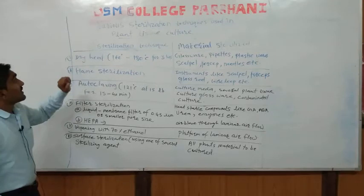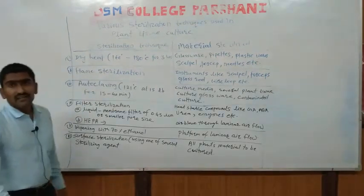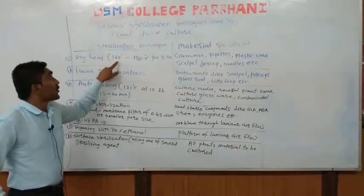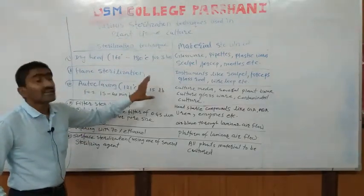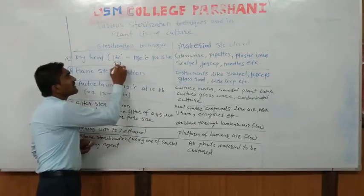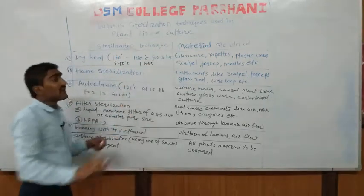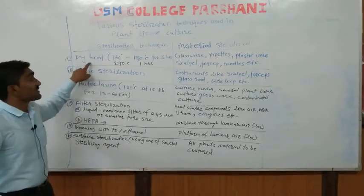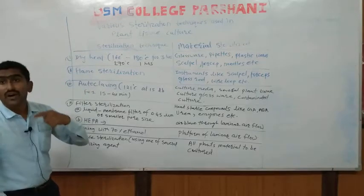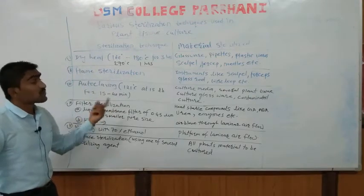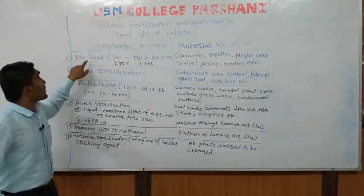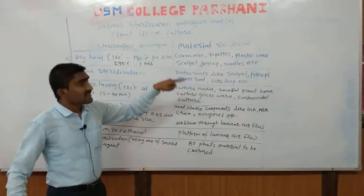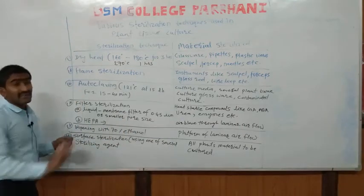Let us look at dry heat sterilization. For dry heat sterilization, a hot air oven is used. The principle involves keeping glassware at 160–180°C for 3 hours, or sometimes at 270°C for 1 hour — reducing the time by increasing the temperature. The dry heat is present inside the hot air oven. Materials that can be sterilized include glasswares, pipettes, plastic wares, scalpels, forceps, needles, etc.